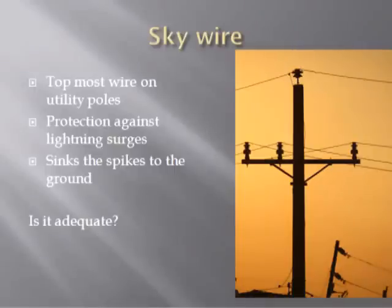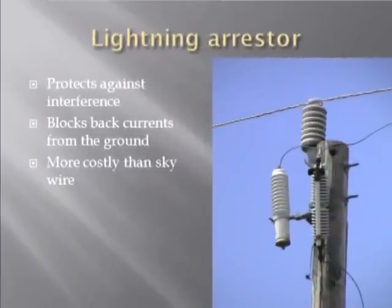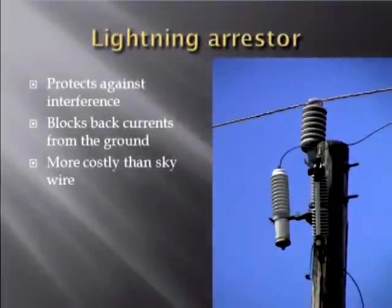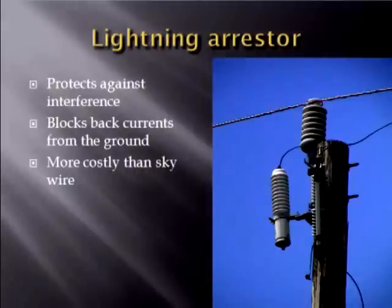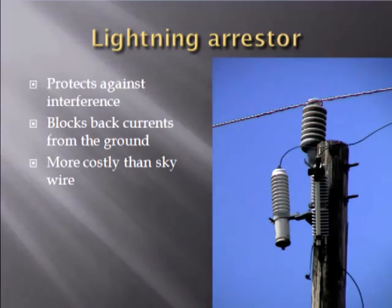But is this protection adequate? The problem with lightning is that sometimes lightning spikes can travel back from the ground. This is why lightning arresters are used to block these back currents. However, it is more costly than the sky wire system. Hence, they are used where sensitive equipment is present and must be protected against back currents.